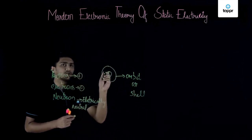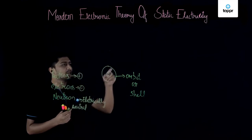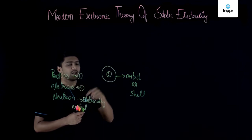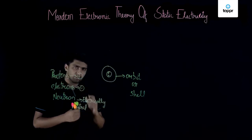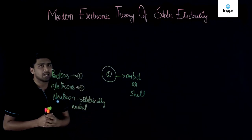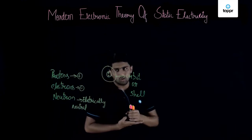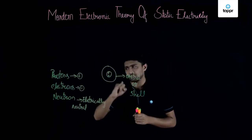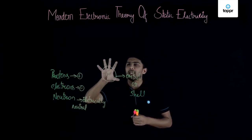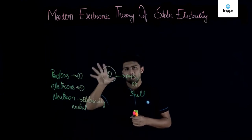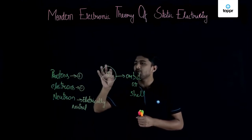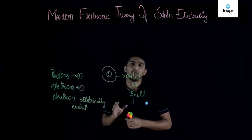In the nucleus you can find protons and neutrons, and electrons revolve around the nucleus in a path called an orbit. There can be many such orbits or shells. The electrons revolving on the outermost shell of an atom are called valence electrons.